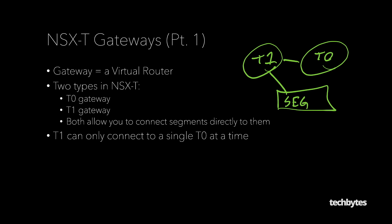A T1 does connect to the T0 — I just drew that out here. The T1 can only connect to a single T0 at any given time. There's no single point of failure here because the T0 ultimately works as active-standby. The point is we have a segment connected to a T1 gateway, and that T1 can only be connected to a single T0 at any given time.